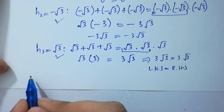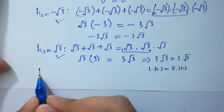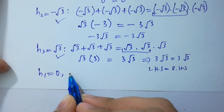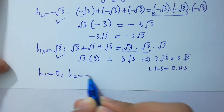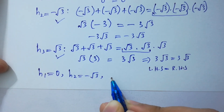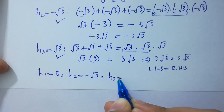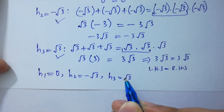So finally: h₁ equal to 0, h₂ equal to minus √3, and h₃ equal to plus √3.